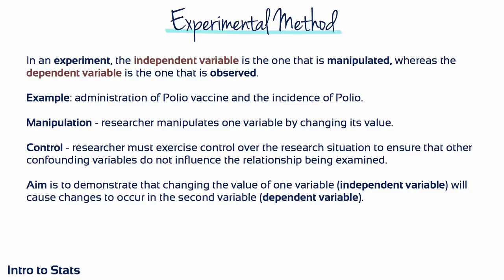To demonstrate a cause and effect relationship between two variables, researchers must use the experimental method. An experiment attempts to show that changing the value of one variable will cause changes in a second variable. For example, is there a cause and effect relationship between administering the polio vaccine and the number of people who have polio — does giving the vaccine cause a decrease in incidence? To accomplish this, the researcher must use manipulation and control: manipulating the giving of the vaccine and measuring the number of polio cases, while controlling for other unrelated variables — called confounding variables — that might influence the relationship.